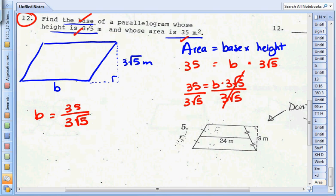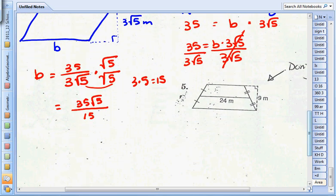It's definitely not in simplest form yet because I have a radical in the denominator, so let's rationalize. Multiply the bottom and the top by √5. Now on the top I have 35√5 and on the bottom I have 3 times 5 or 15. So those 5s are going to become a pair, they cancel the radical symbol out. I'm left with just the radicand 5, 3 times 5 is 15.